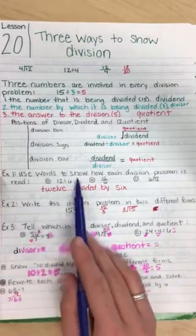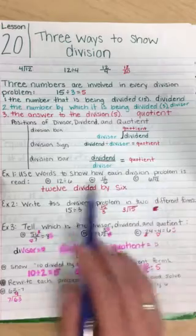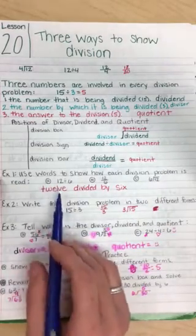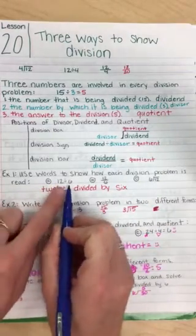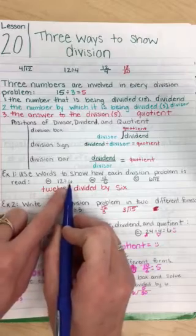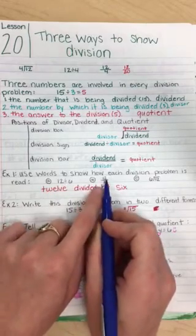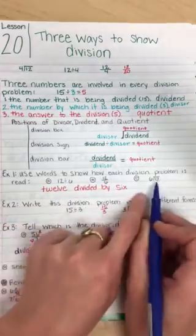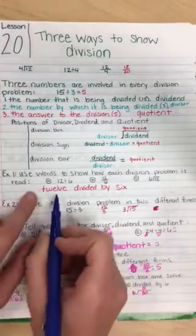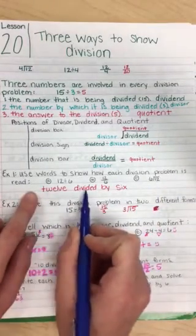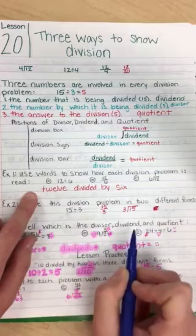Use words to show how each division problem is read. So in A, how is this division read? 12 divided by 6. B, 12 divided by 6. C, 12 divided by 6. So in all three ways, it's 12 divided by 6.